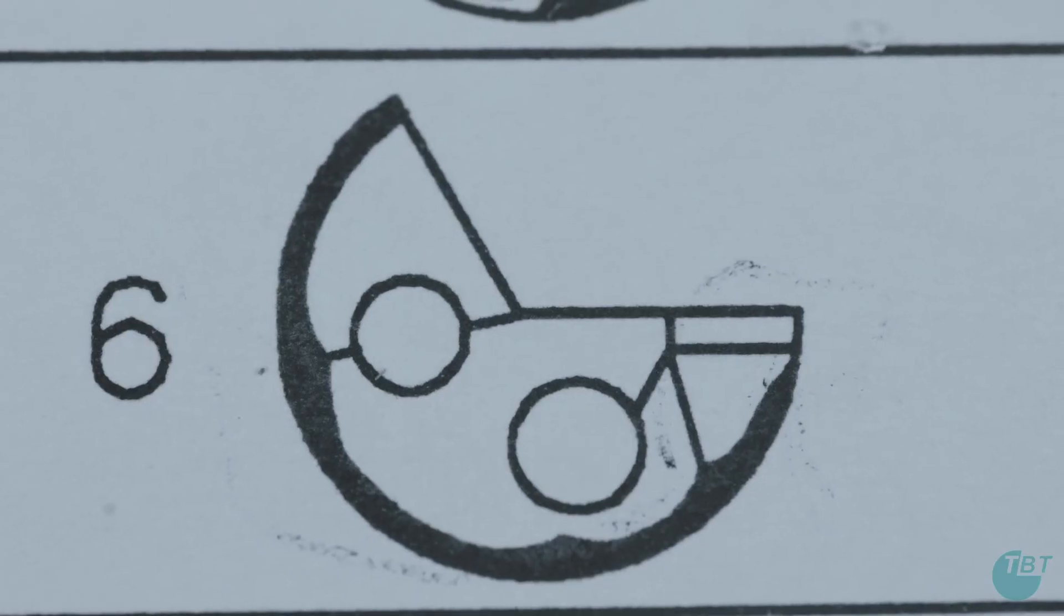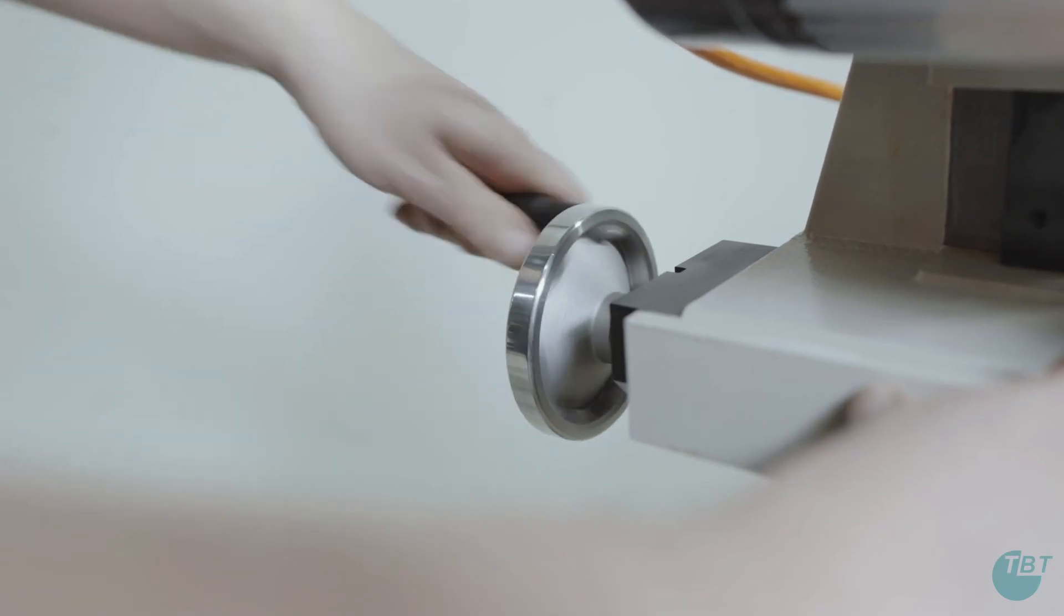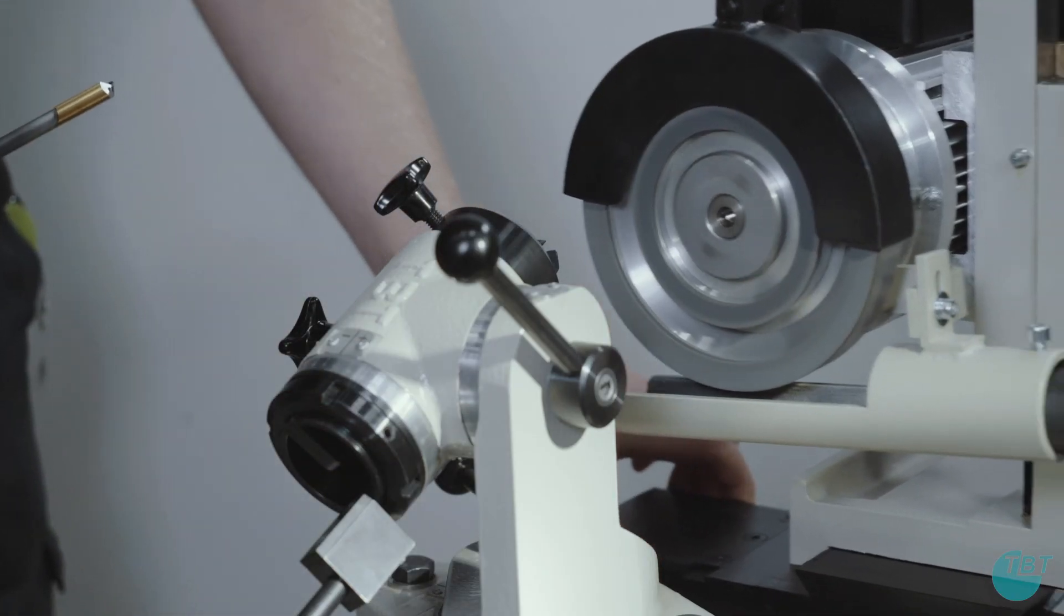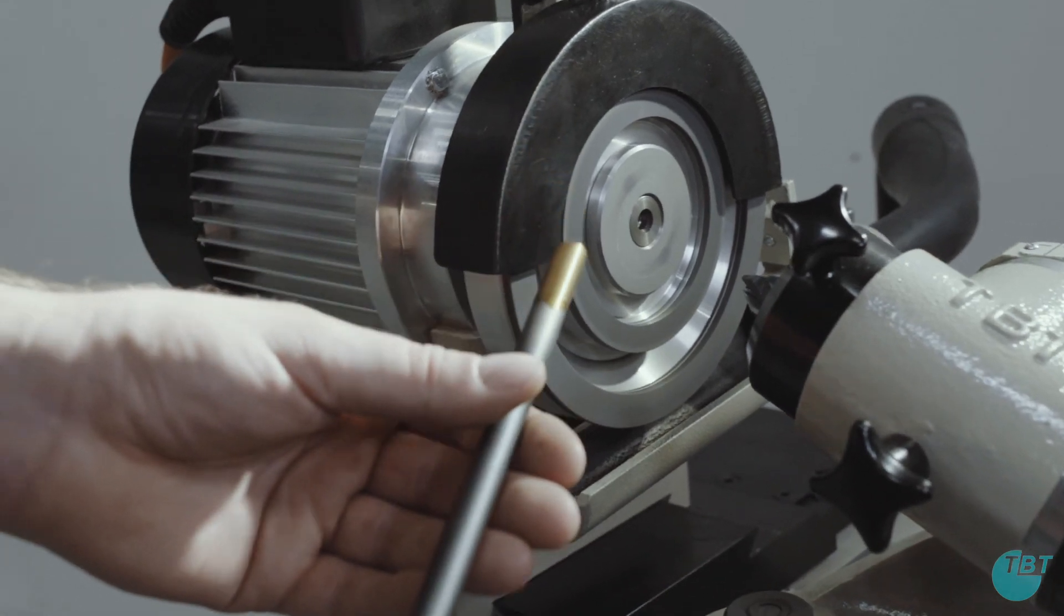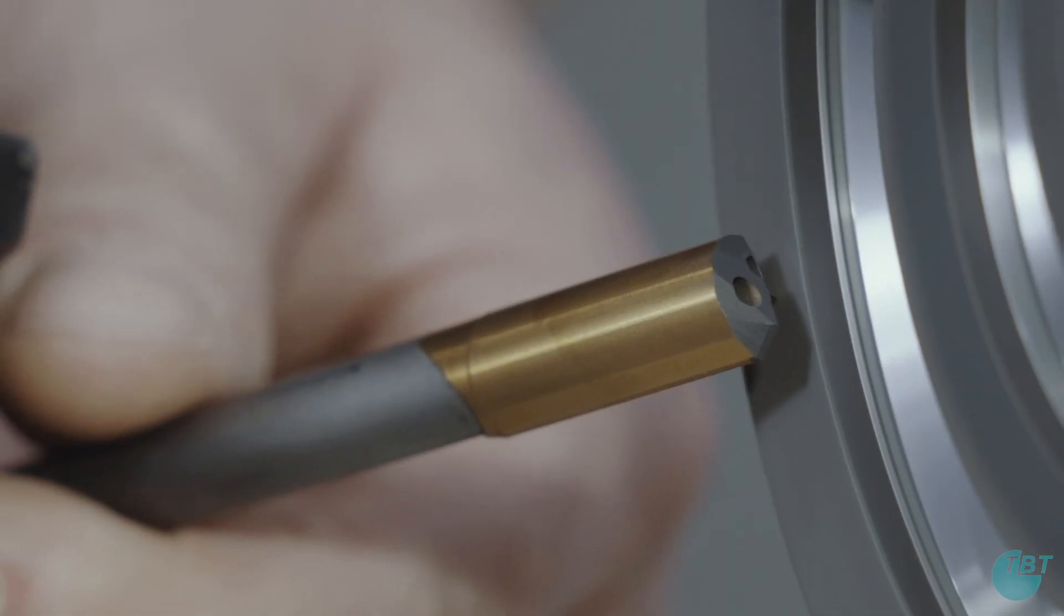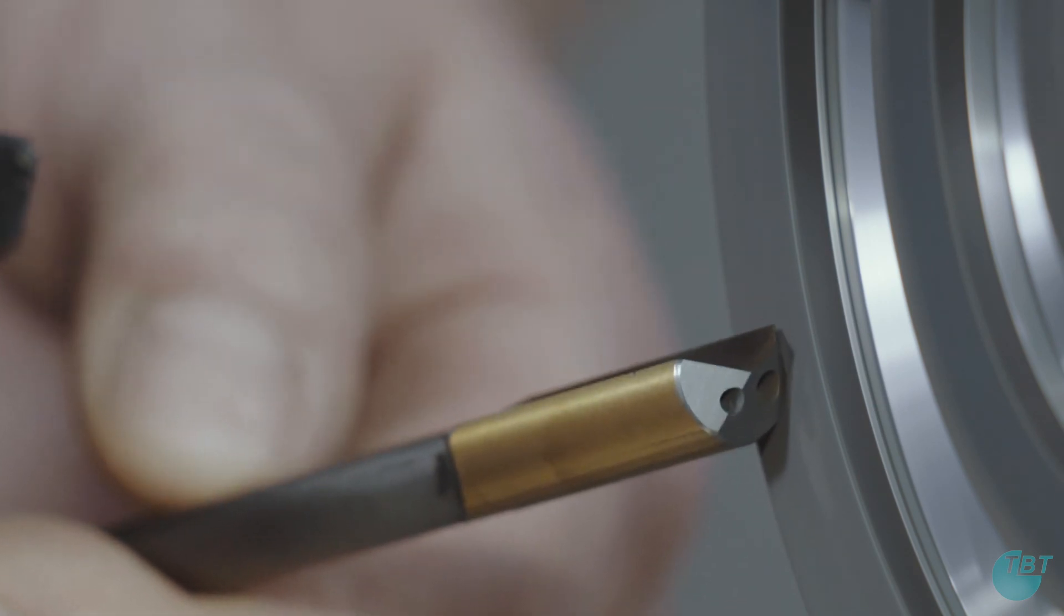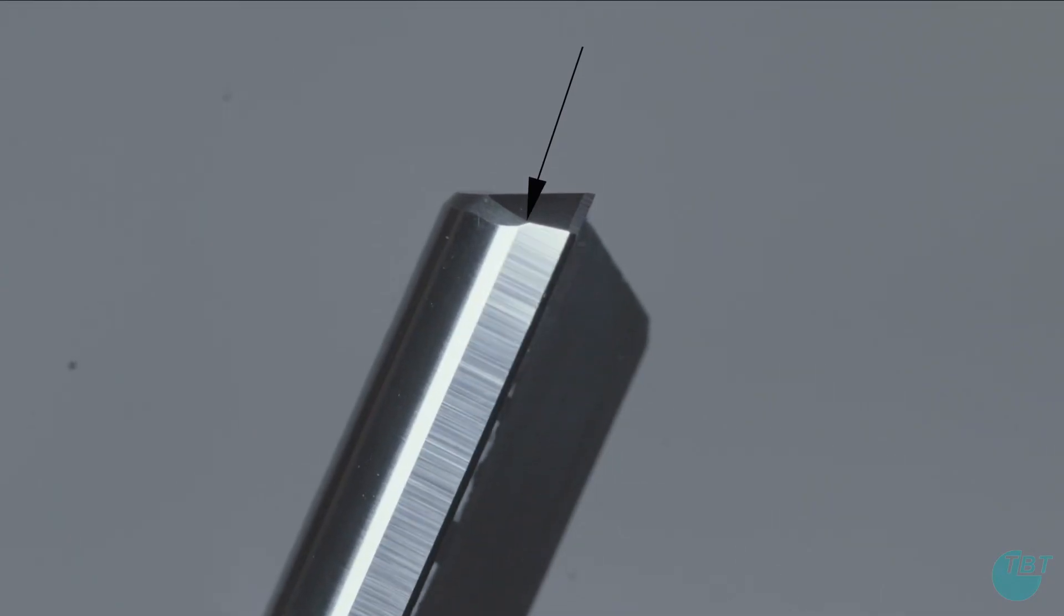As a final step, the tool needs to be warped. To do this remove the drill out of the clamping unit and warp the tool at an angle of approximately 15 degrees. Please take care and don't warp the circular land.